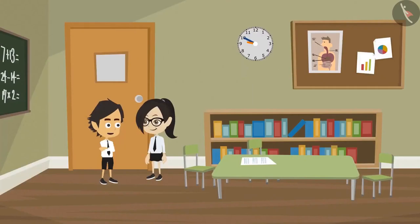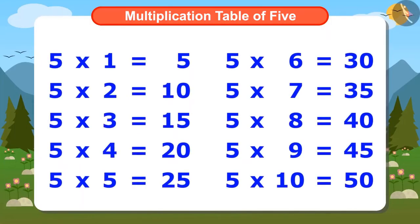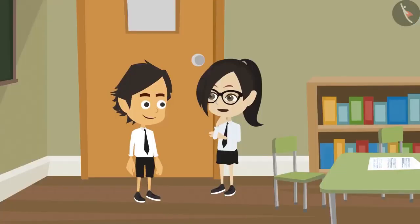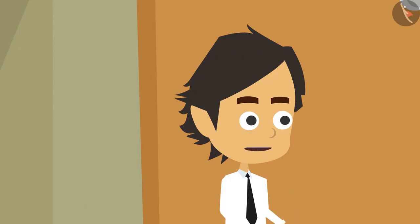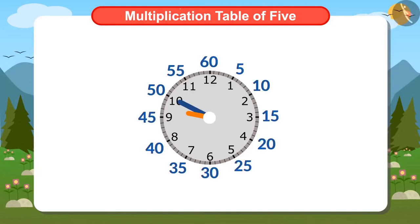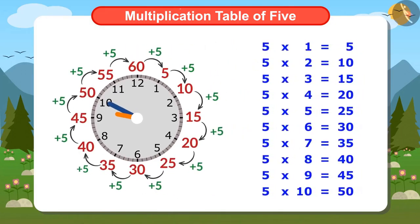Hey Vandana, you don't need to count. Then how will we find out how many minutes have passed? I use the multiplication table of 5. What is the relation between counting minutes and the multiplication table of 5? There is a direct relation. See, the difference between all these numbers is 5, and the difference between the numbers in the multiplication table of 5 is also 5.